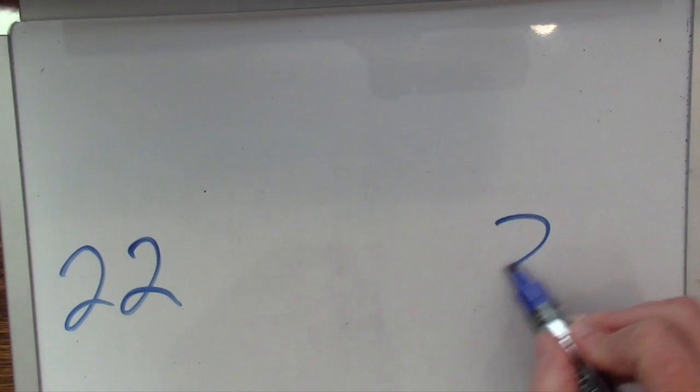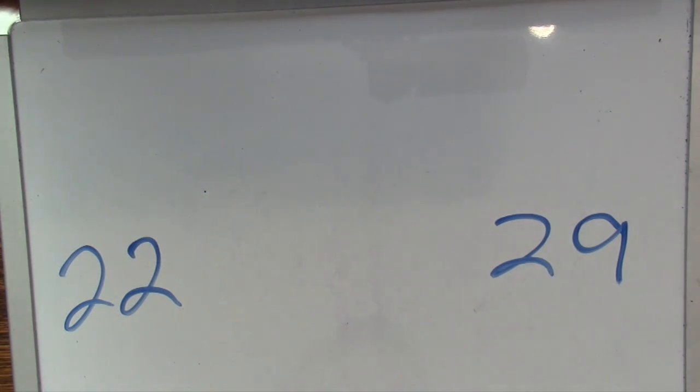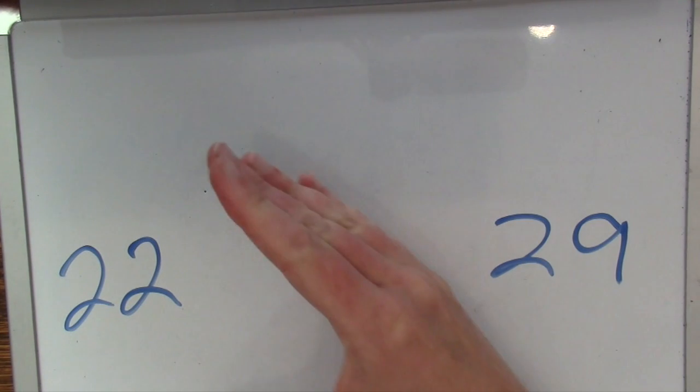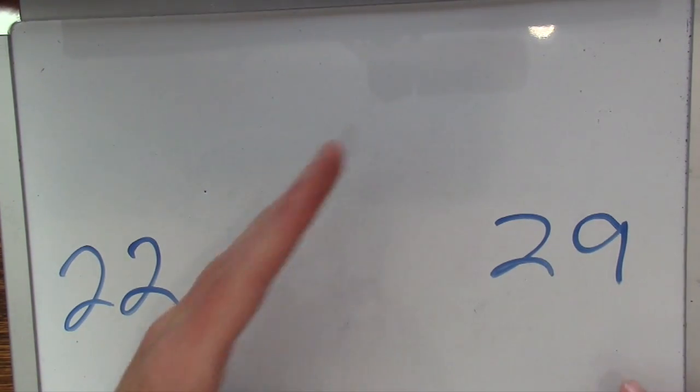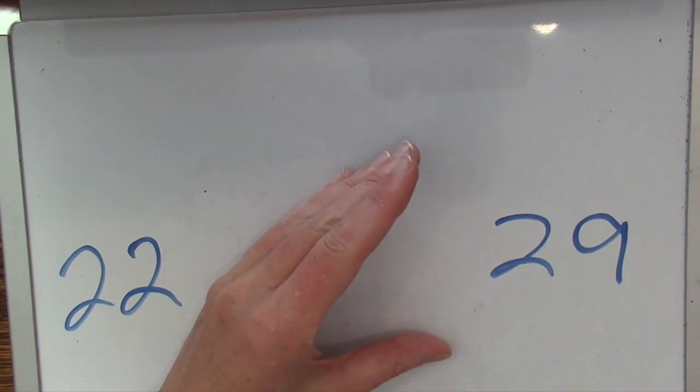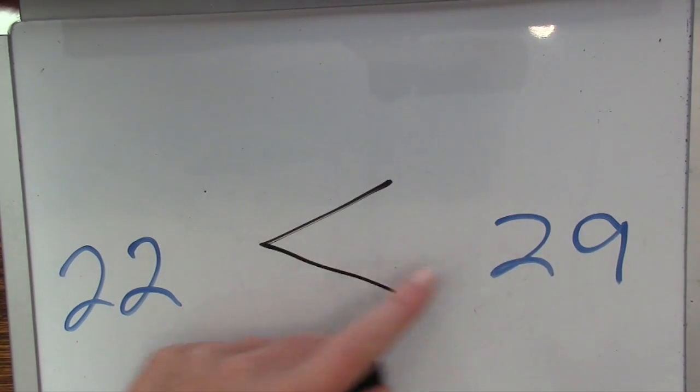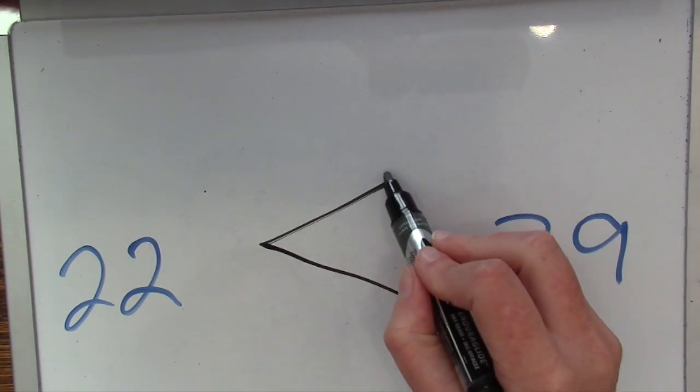Let's try a couple of other numbers. We have 22 and 29. 29, 22, which one is bigger? 29 is bigger, so we're going to make his mouth facing the 29, bigger on the side of the 29.